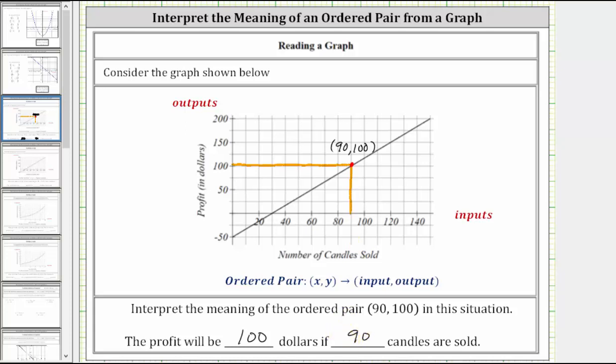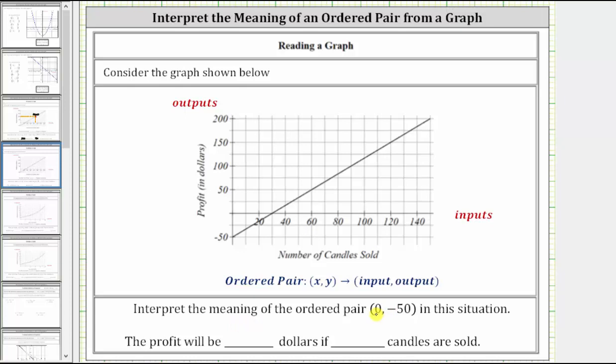Let's look at a second ordered pair. Now let's consider the ordered pair (0, -50). If we locate zero on the horizontal axis, that would be here. If we move down to the graph from this location, this is the point on the graph where the input is zero, and we can see the corresponding output is negative 50.